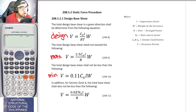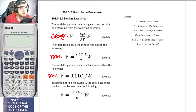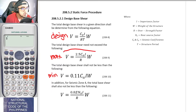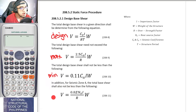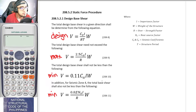After solving for the design base shear, you compare it with the maximum and minimum values. If the design base shear is higher than the maximum, you use the maximum value. If it is lower than the minimum, the governing value is the minimum. Additionally, for seismic zone 4, the total base shear shall also not be less than an additional minimum formula.